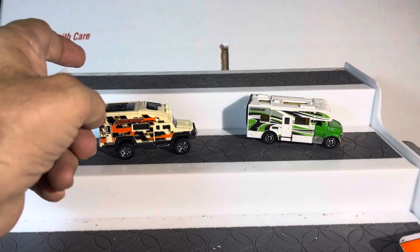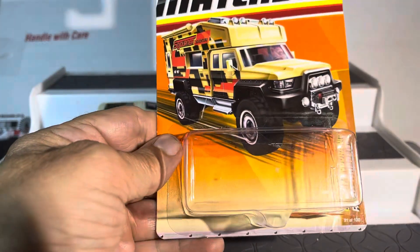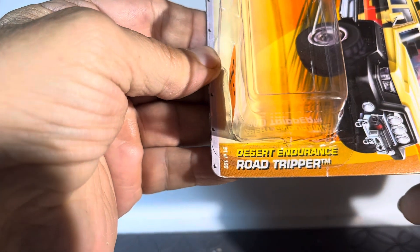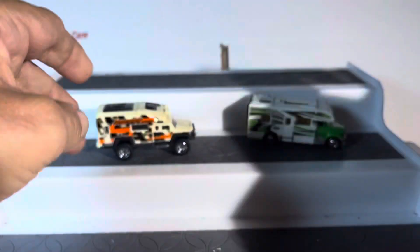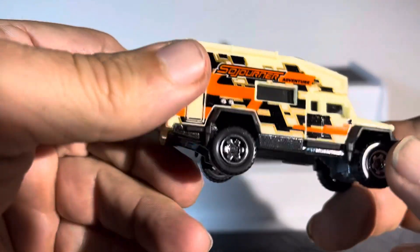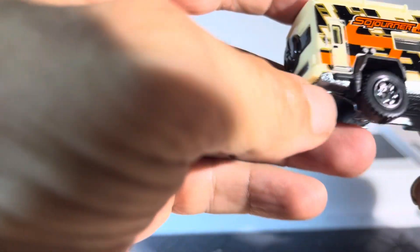What's up guys, welcome to the show. We got a couple of Matchbox trucks. This is Desert Endurance Road Tripper, and the other one we're gonna find out what that is. This is the Road Tripper.